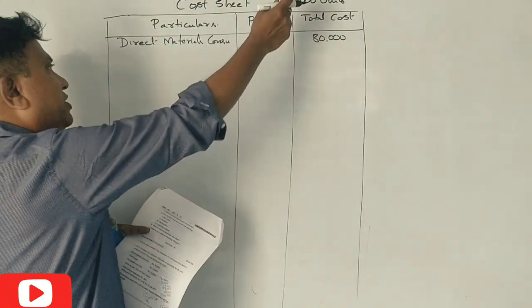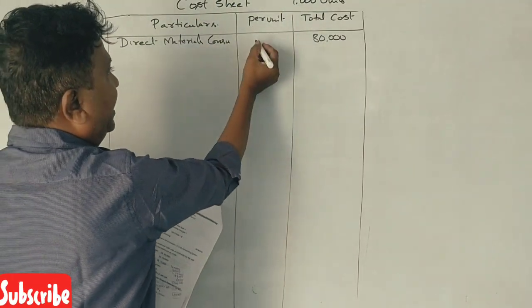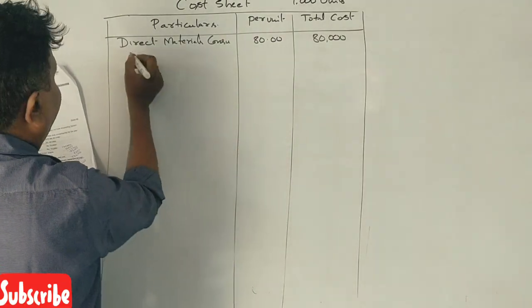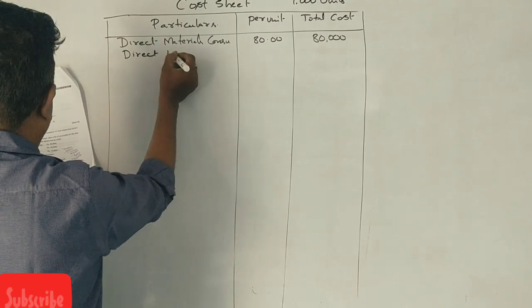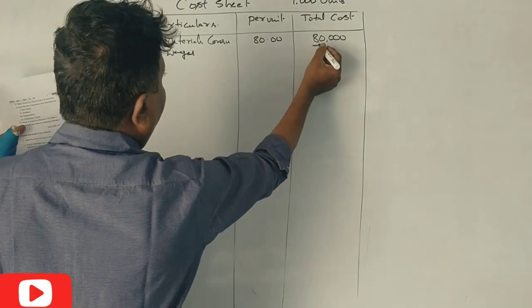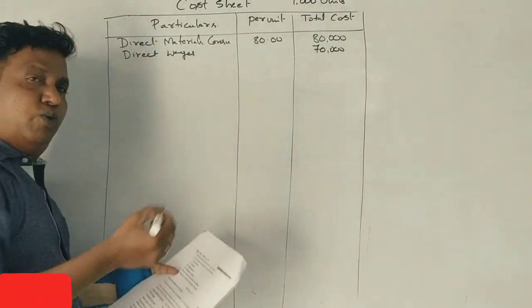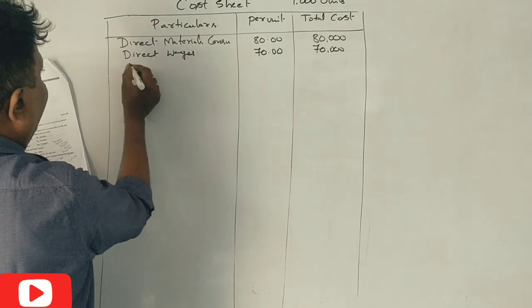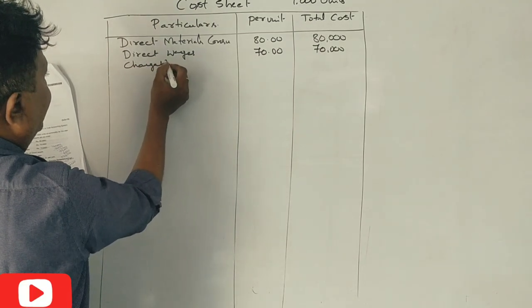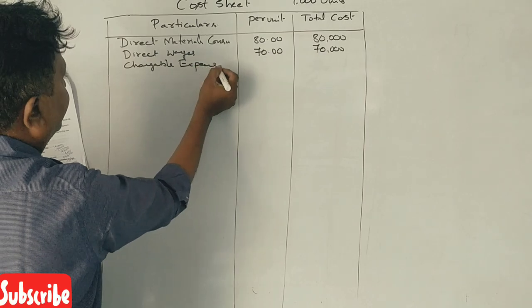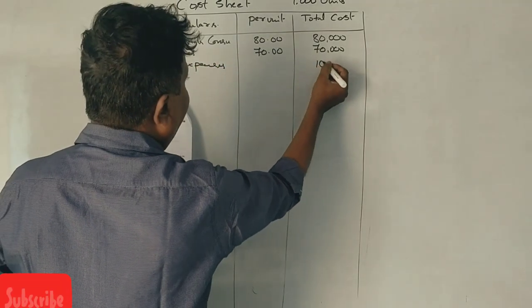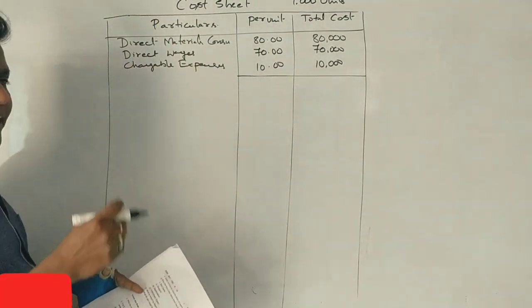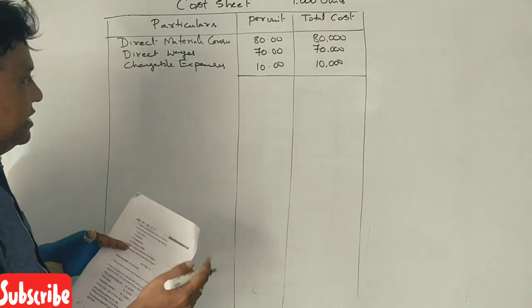Format for 1,000 units. Direct material consumed Rs. 80,000, one unit is Rs. 80 per unit. Direct wages Rs. 70,000, per unit Rs. 70. Chargeable expenses, which is nothing but direct expenses, Rs. 10,000, per unit Rs. 10. Direct material, direct labor and direct expenses.